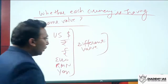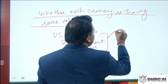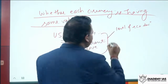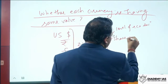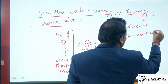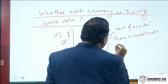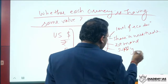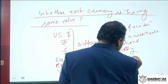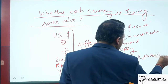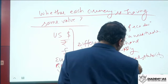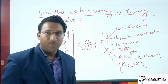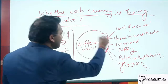Why do they have different values? The value of any currency depends upon the level of economic development of the country, its share in world trade, demand and supply, political stability, inflation, and so on. There are a lot of factors which determine the value of a country's currency. The key point is that each currency has a different value.